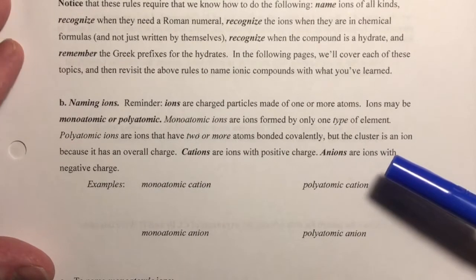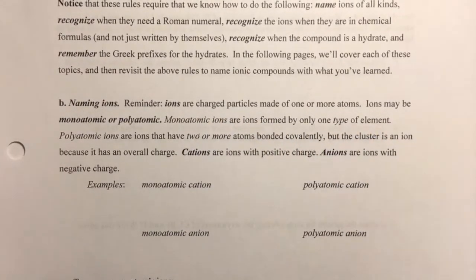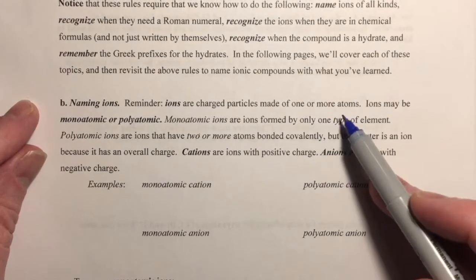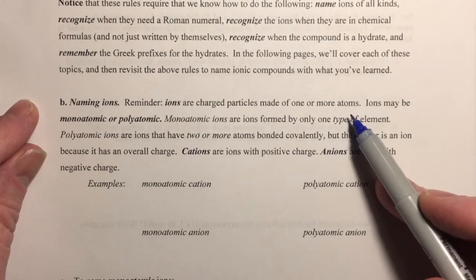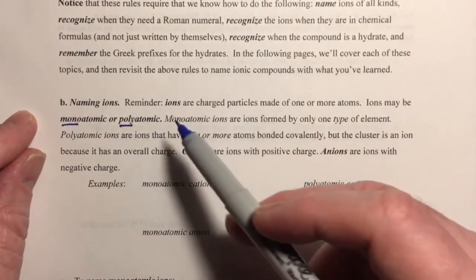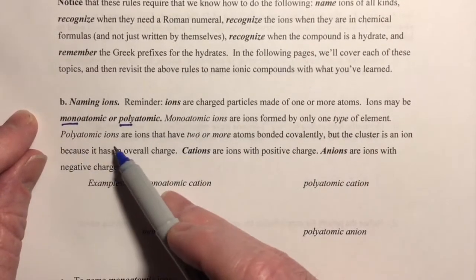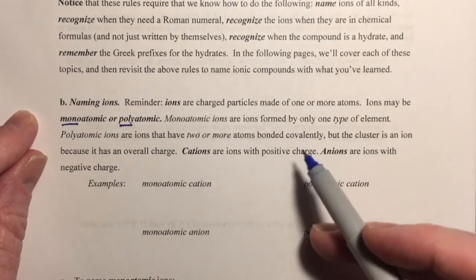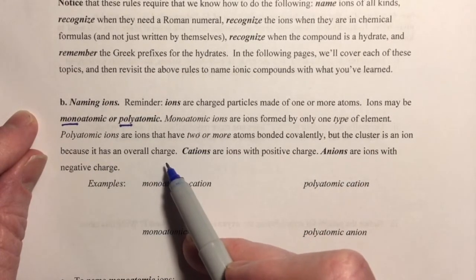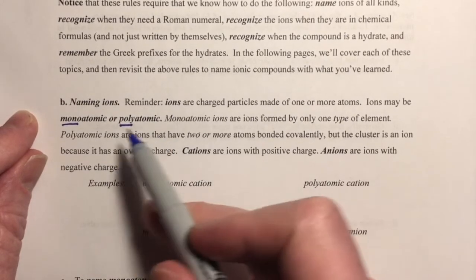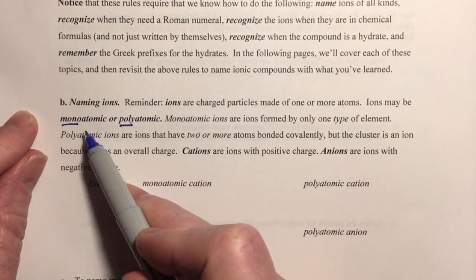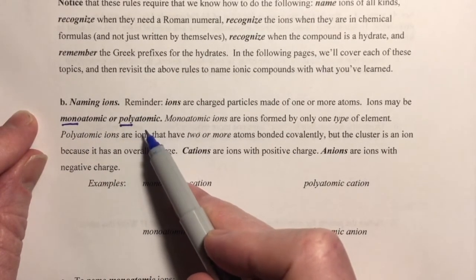First, some basic review from previous chemistry. Ions are charged particles made of one or more atoms where the cluster has gained or lost an electron. Ions may be monoatomic — made up of only one atom — or polyatomic — made up of two or more atoms. In a polyatomic ion, the atoms are bonded covalently together, but the cluster becomes an ion by taking on a charge through gaining or losing an electron.